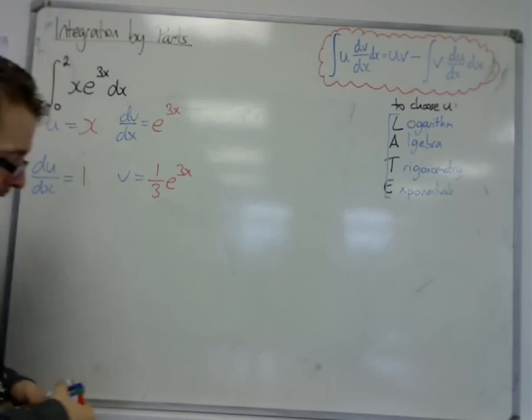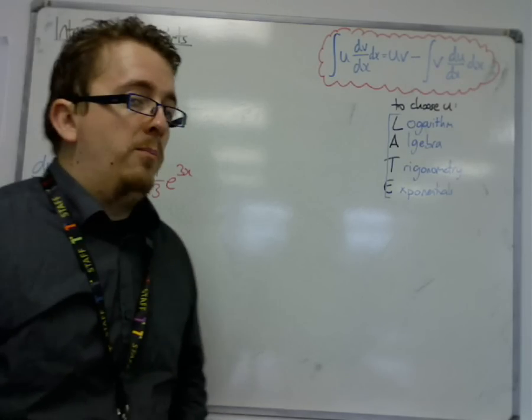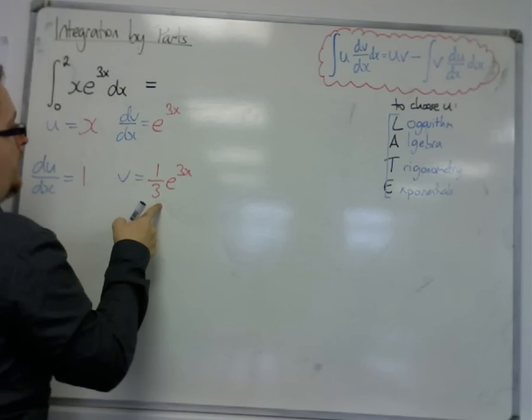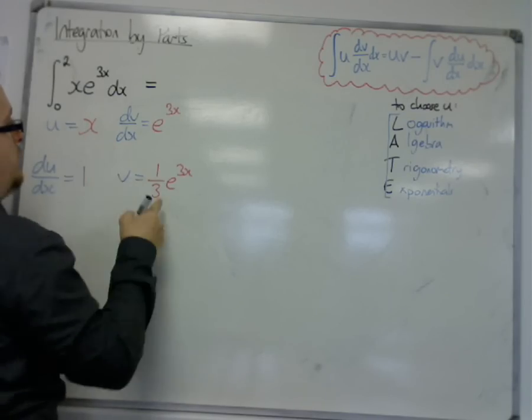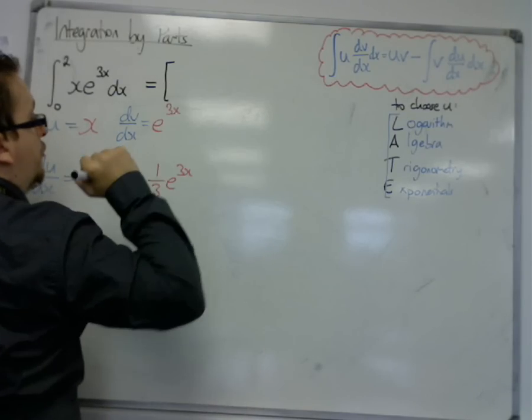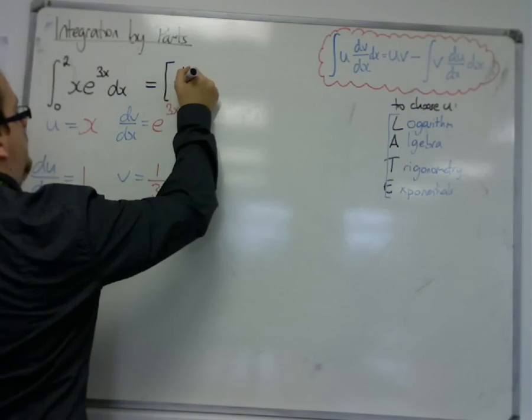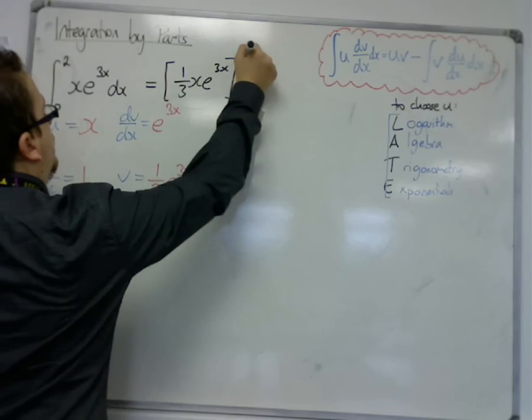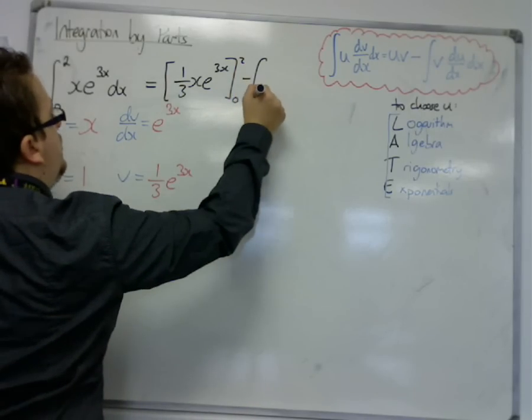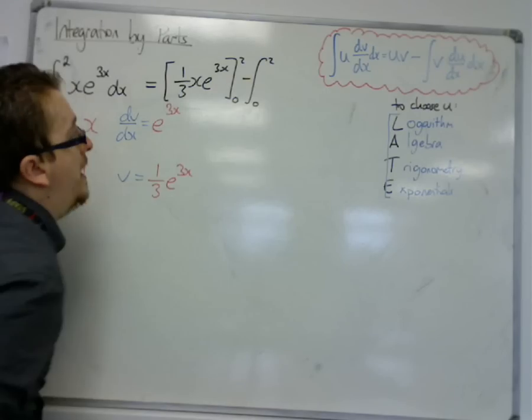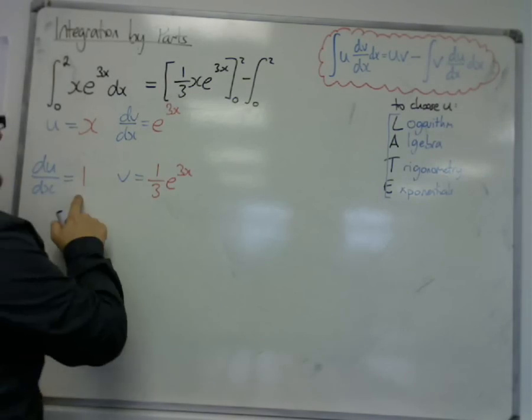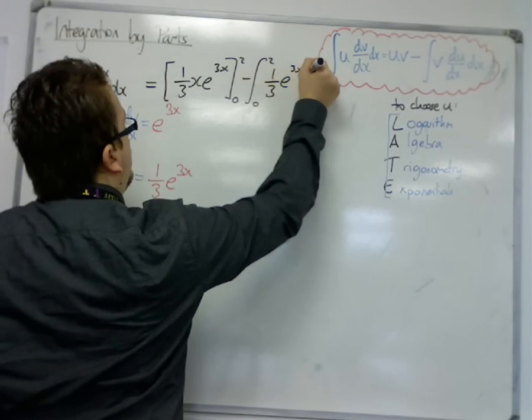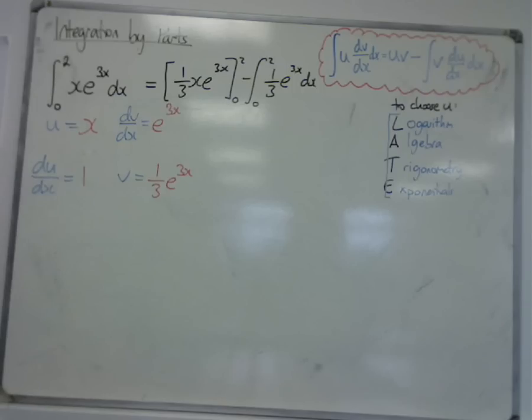So then, it is just a case of plugging it straight into the formula. Now, uv is 1 third x e to the 3x, multiplying these two together. Now, I'm going to put that straight into a square bracket because I want to evaluate it between 0 and 2. And I'm taking away the integral with the limits now on the integral, 0 to 2, of du by dx times v. So that's 1 third e to the 3x dx.